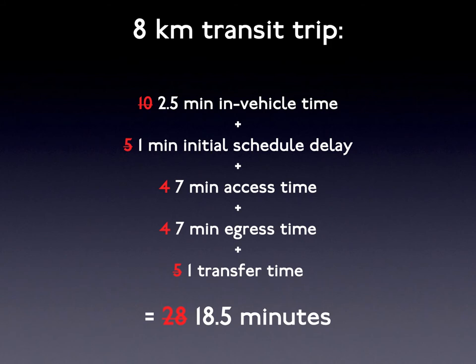Seven minutes walk egress time, though again changes to land use patterns may change this. And one minute transfer time on average, even if effectively uncoordinated. For a five-mile trip with transfer, we now only lose about 18.5 minutes. This is less than the local transit service above and can be reduced if more people live closer to the station rather than spread out uniformly across the landscape.